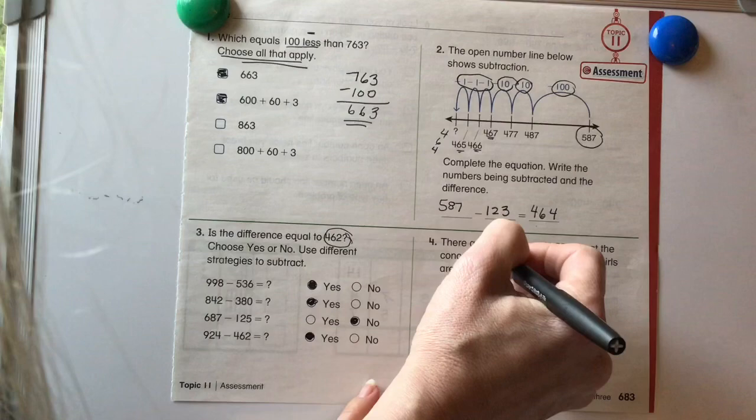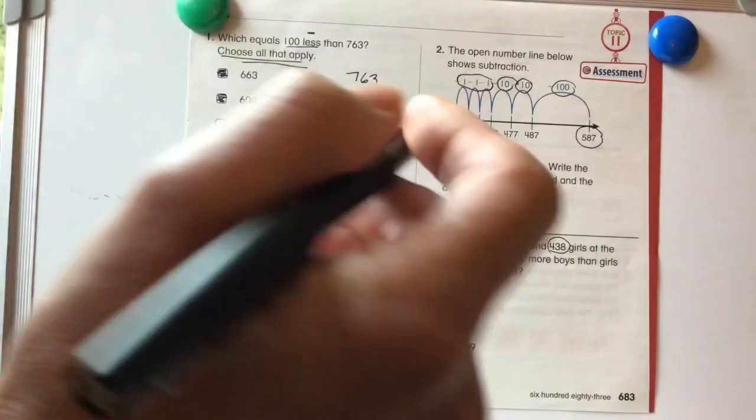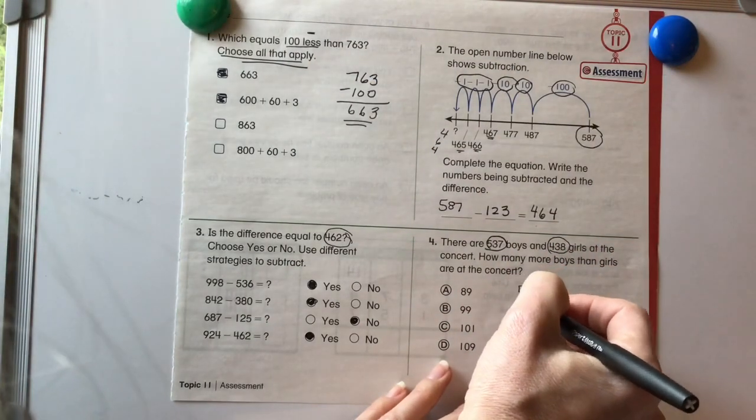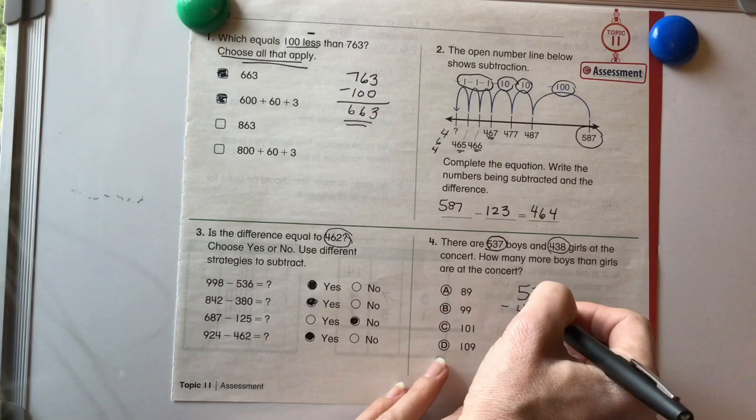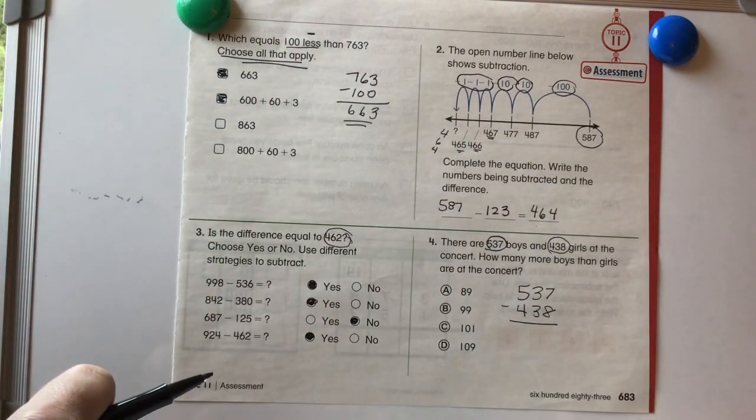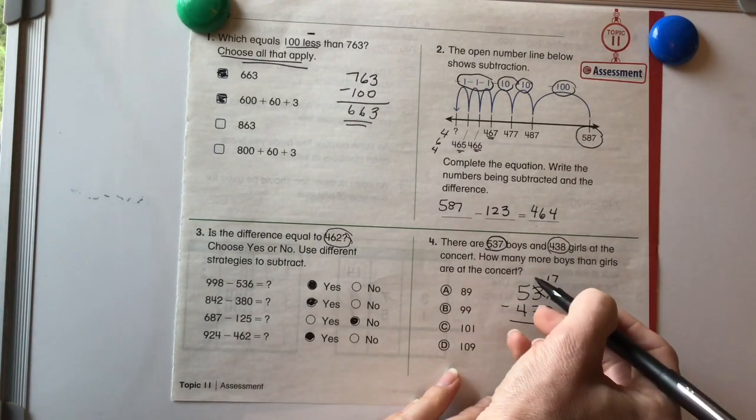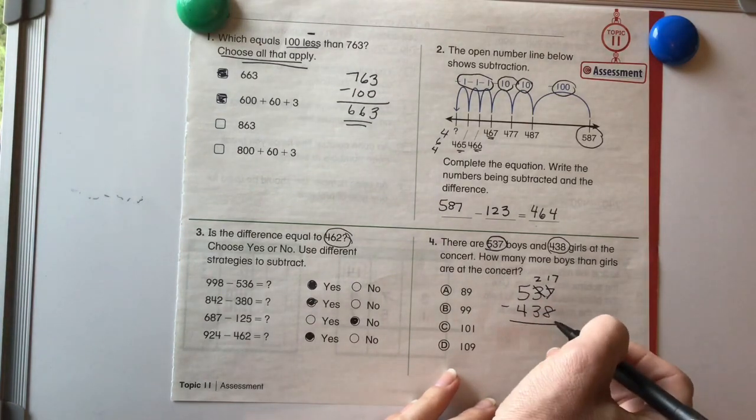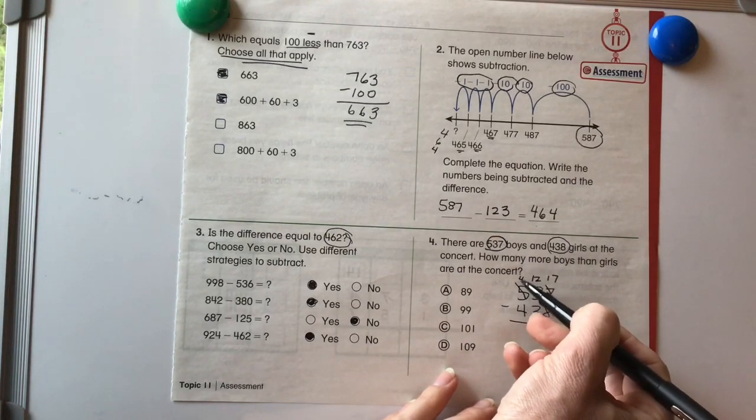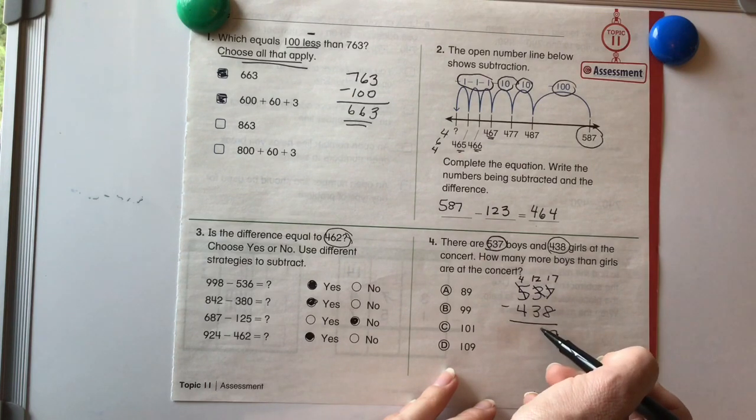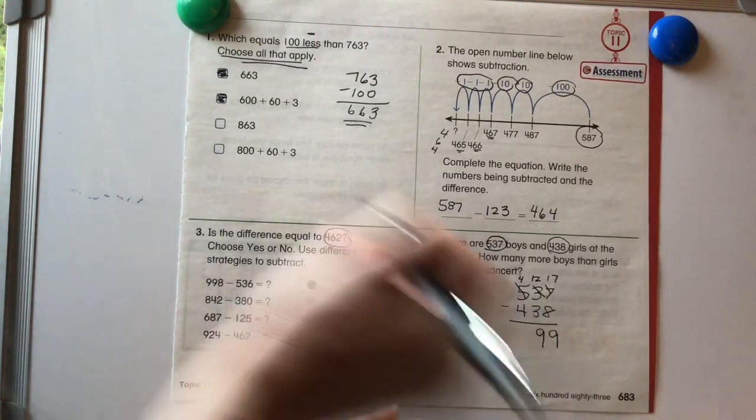Number four. There are 537 boys and 438 girls at the concert. How many more boys than girls are at the concert? So we're going to need to subtract this to find the difference. That's 537 minus 438. So we're going to go through and subtract that one out. 7 minus 8 isn't going to work. So that's going to become 17, and that will be 2 because we have to regroup. 17 minus 8 is 9. 2 minus 3 is not going to work. So we're going to have to regroup again. 12 minus 3 is 9. 4 minus 4 is 0. So we know that 99 is going to be our answer.